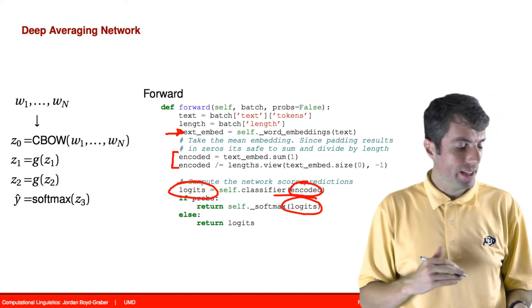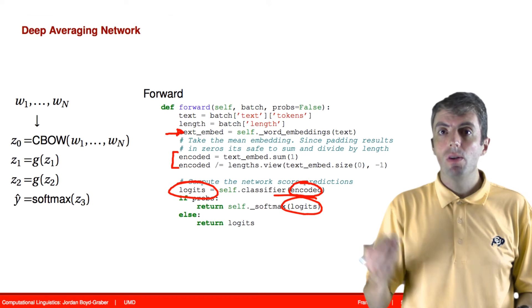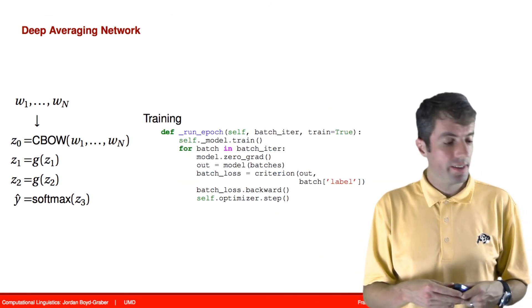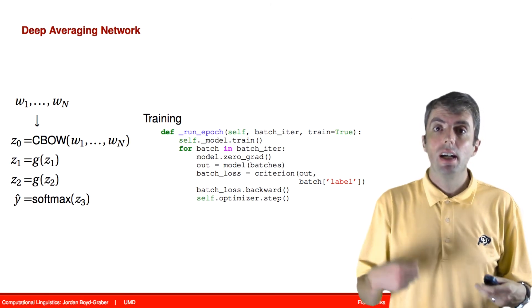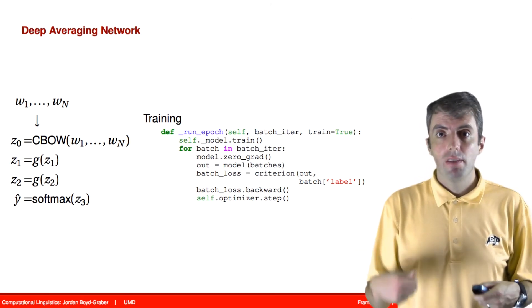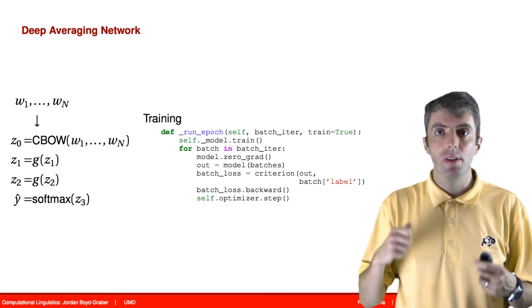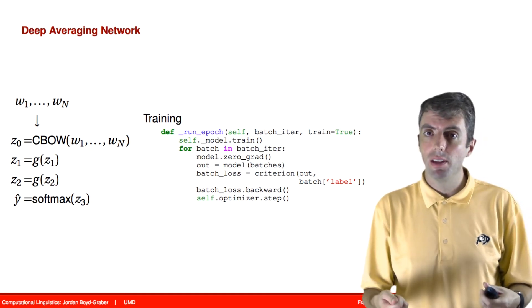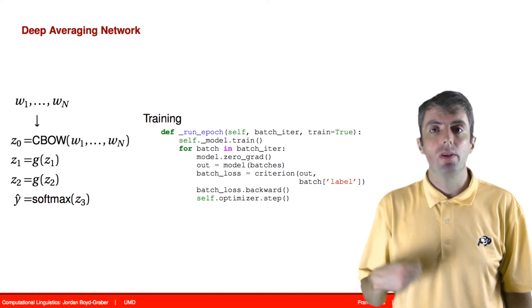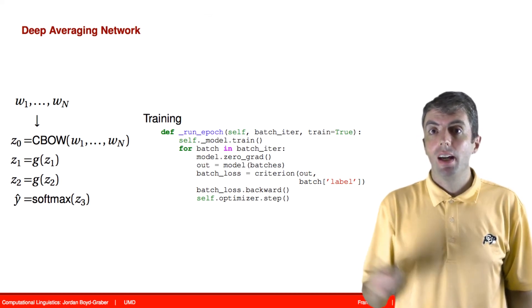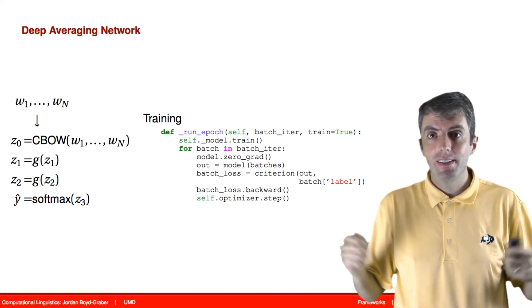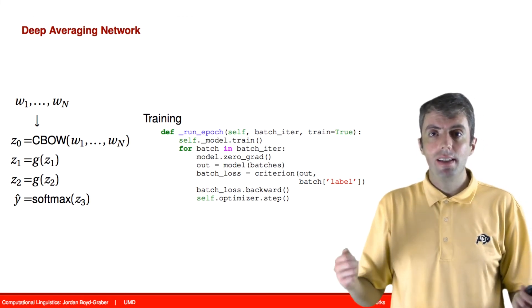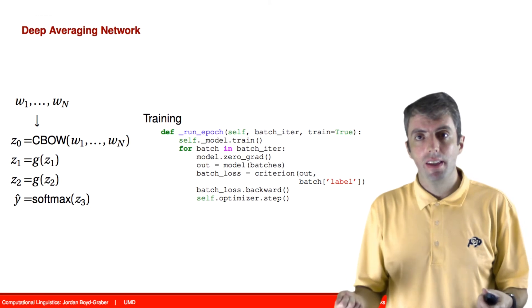Now we have everything that we need. We can now train our model. Training the model looks exactly like all of the other examples we've seen thus far. You set up an optimizer. For each example, you zero out the gradients, you make a prediction, you compute the loss, and then you update your model. Very simple to get started with a model. You can easily define models, then quickly train them. You can make slight tweaks to the model as well.